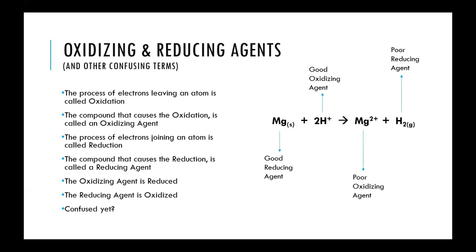These terms can be confusing, so there are ways to remember them. One is OIL RIG: Oxidation Is Losing, Reduction Is Gaining. In oxidation you're losing electrons; in reduction you're gaining electrons. Another way to remember reduction is that the charge goes down — hydrogen goes from a plus charge to zero, so the charge was reduced.